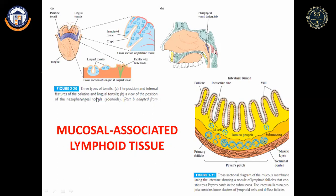Tonsils are located at specific positions: lingual tonsils at the base of the tongue, palatine tonsils at the sides and back of the tongue, and pharyngeal tonsils at the roof of the nasopharynx. All tonsils contain reticular cells, lymphocytes, macrophages, granulocytes, and mast cells providing protection against foreign antigens.